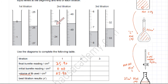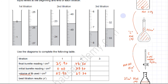For titration 2: the initial burette reading is 23.30 cm³ and the final reading is 48.60 cm³. So 48.60 minus 23.30 gives a volume of 25.30 cm³ of S used. For titration 3: initial is 7.30 cm³ and final is 32.40 cm³, giving 32.40 minus 7.30 equals 25.10 cm³.